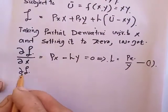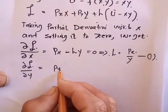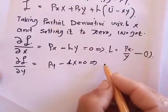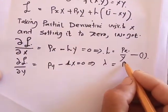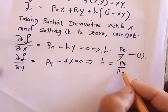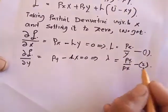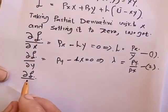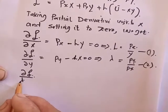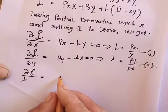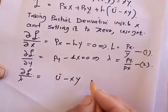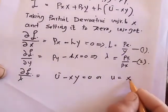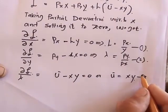Again differentiating with respect to y, we get P_y minus lambda·x equals zero, or lambda equals P_y divided by x. This is equation number 2. Similarly, differentiating this function with respect to lambda, we get the constraint equal to zero, or utility equals x·y. This is equation number 3.